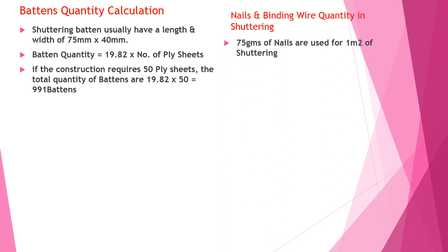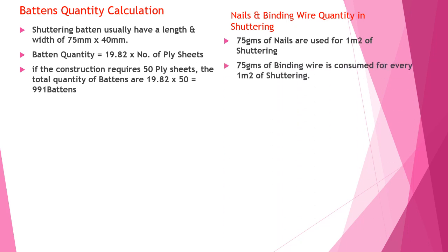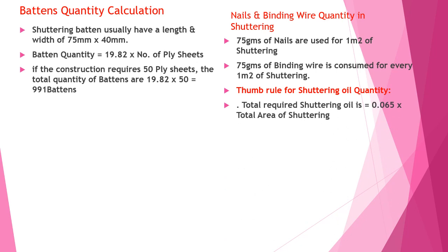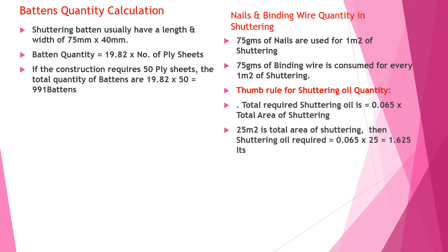Nails and binding wire quantity in shuttering: 75 grams of nails are used for one square meter of shuttering, and 75 grams of binding wire is consumed for every one square meter of shuttering. Thumb rule for shuttering oil quantity: total shuttering oil required = 0.065 × shuttering area. For example, 0.065 × 25 = 1.625 liters.